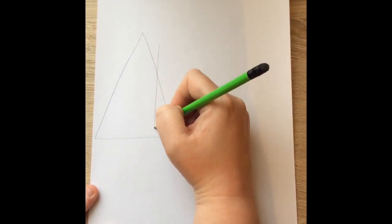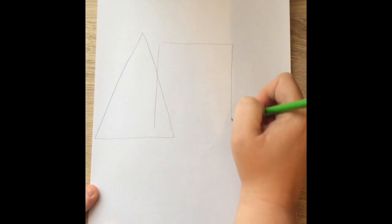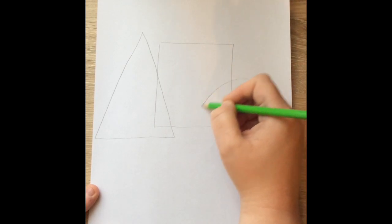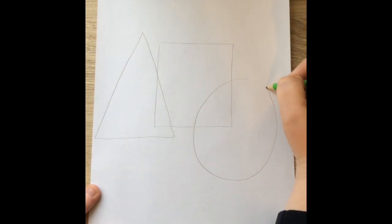The first thing you need to do is draw a large triangle, square, and circle, and make sure that they are all overlapping.